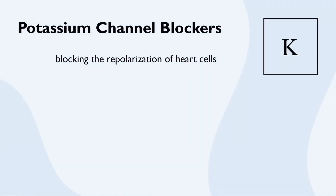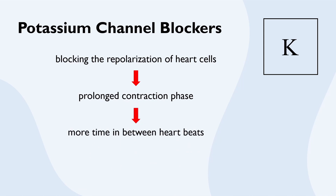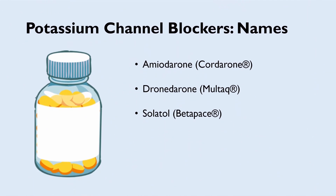Potassium channel blockers slow down the conduction of electrical impulses in all heart cells. They accomplish this by blocking the repolarization of the heart cells, which ultimately leads to a prolonged contraction phase and more time in between heartbeats, causing heart rate to decrease. Some examples of potassium channel blockers include amiodarone, dronedarone, and sotalol.